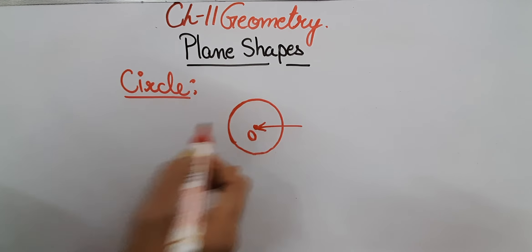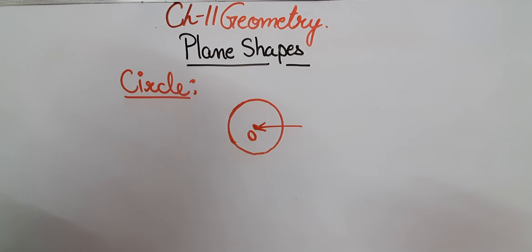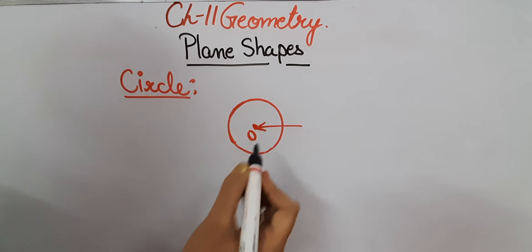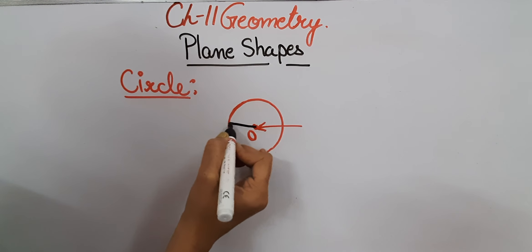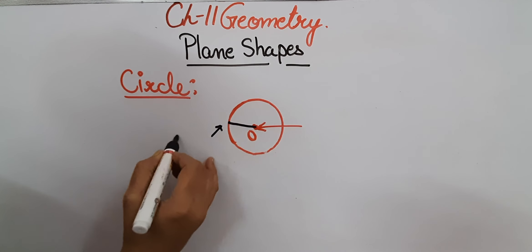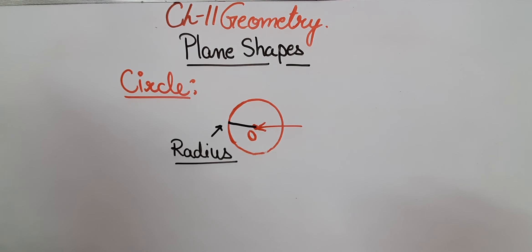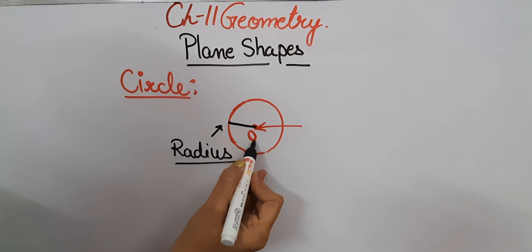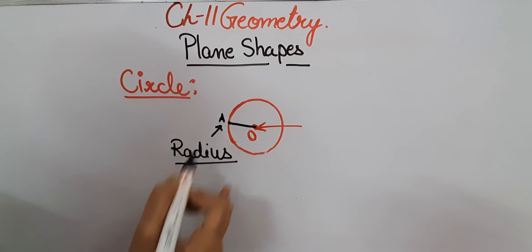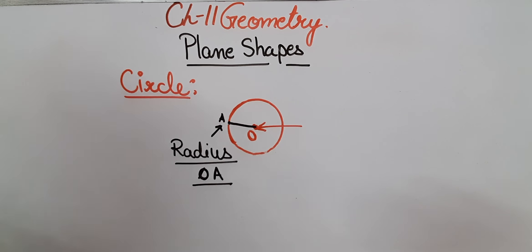We can name the center as O. The line joining the center of the circle to the boundary of the circle — for example, if I am joining this center to the boundary here — is known as the radius. So if we name the center O and the point on the boundary A, the radius will be named OA. That's all with the plane shapes, thank you.